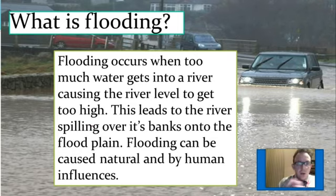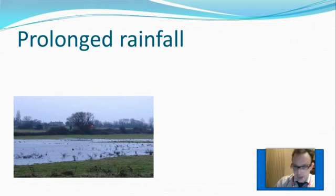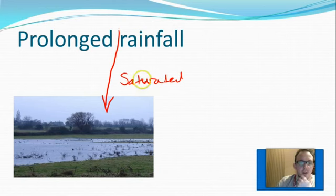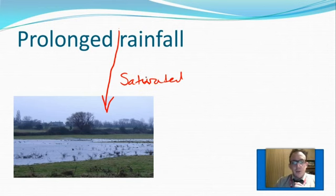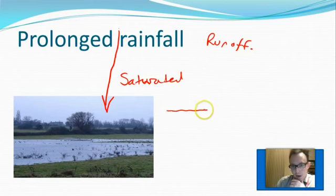The video will go quite quickly, so at any point where you need to just pause it and make notes in your book, do so. The first physical factor is the obvious one — prolonged rainfall. Prolonged rainfall causes a problem because of saturated ground. Saturated ground is caused by prolonged rainfall. When it rains for too long, the ground is like a sponge — it can only hold a certain amount of water.